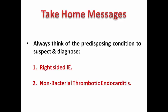Our take-home message: always think of predisposing conditions to suspect and diagnose right-sided infective endocarditis — IV drug use, immunocompromised state, or indwelling venous catheter — and non-bacterial thrombotic endocarditis in the presence of lupus, cancer, or antiphospholipid syndrome. The key to diagnosis is identifying the predisposing condition and correlating it with the clinical picture. Thank you for watching, and stay tuned for another video on a specific type of infective endocarditis.